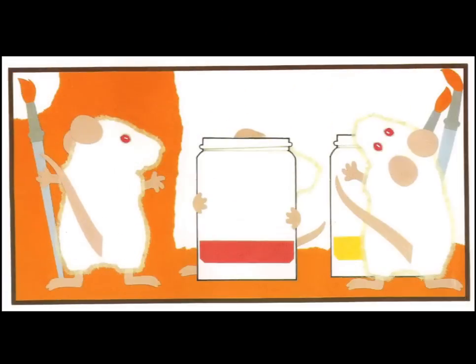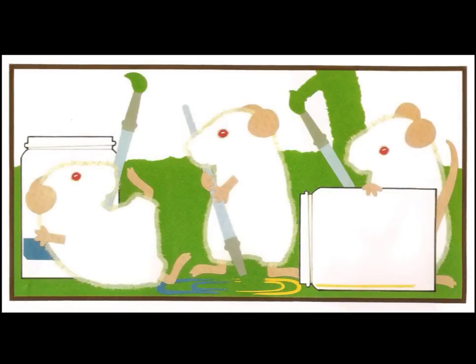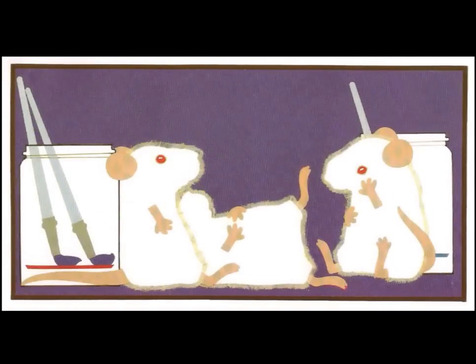They mixed red and yellow to paint an orange part, yellow and blue to paint a green part, and blue and red to paint a purple part.